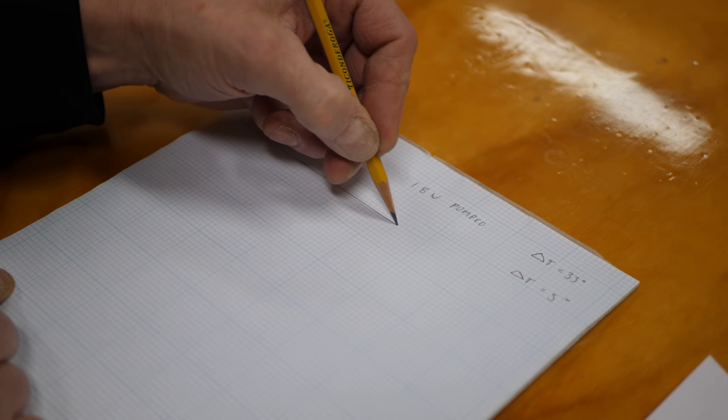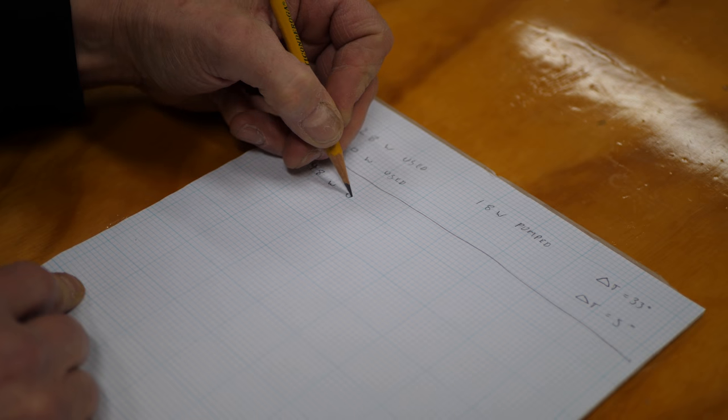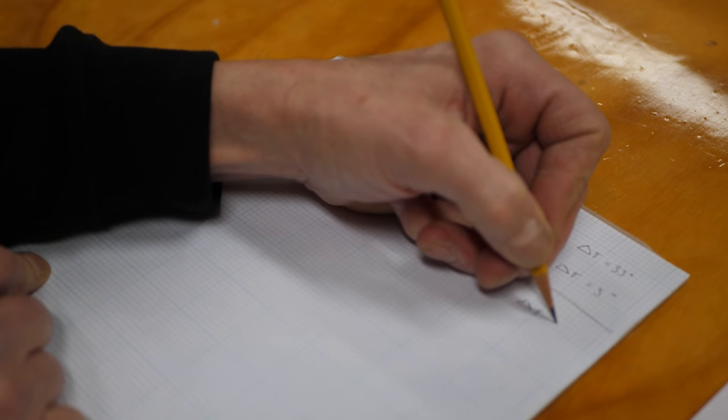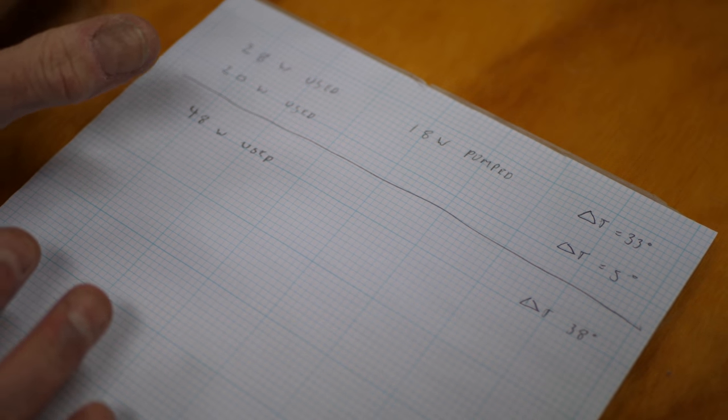Now the total sum here means that we're using a total of 48 watts used in the series setup and we have a delta T of 38 degrees. Now if we said let's see if we can just do this with one chip.